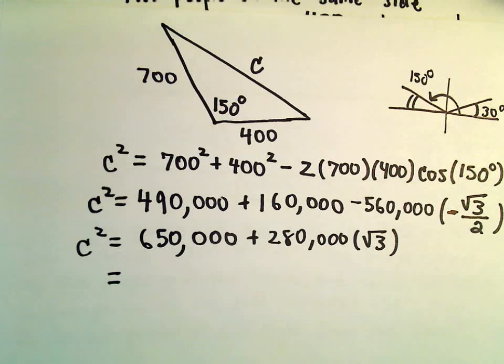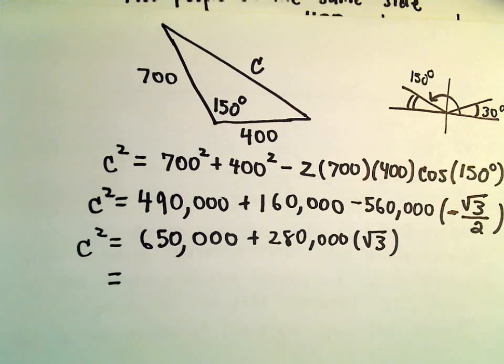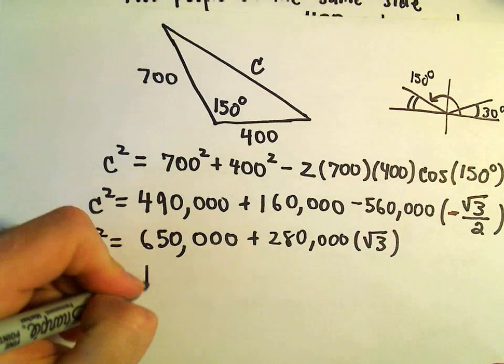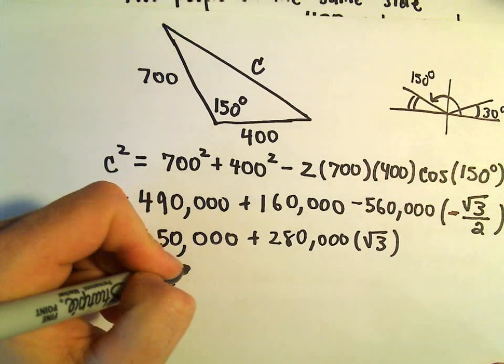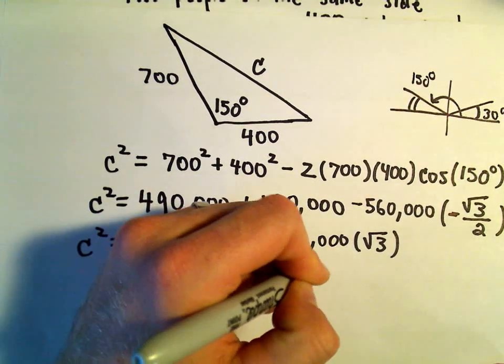So let's do the square root of 3. The square root of 3 is roughly 1.73205. I'll multiply that by 280,000. Add that to 650,000. I'm getting this to be 1134974226.